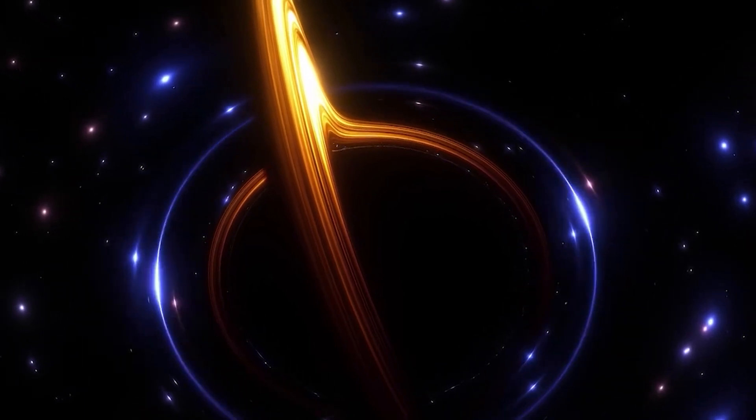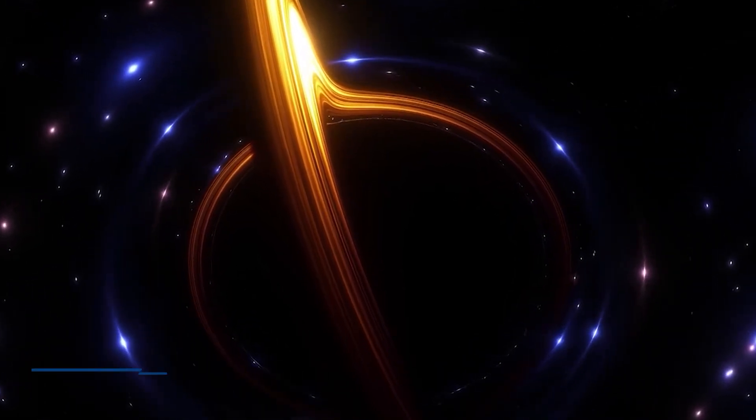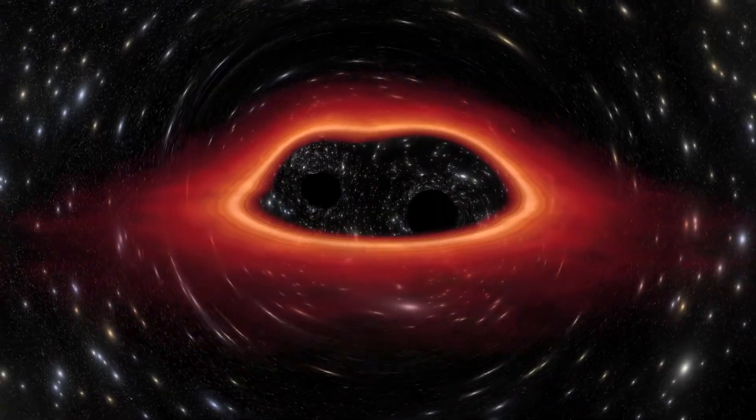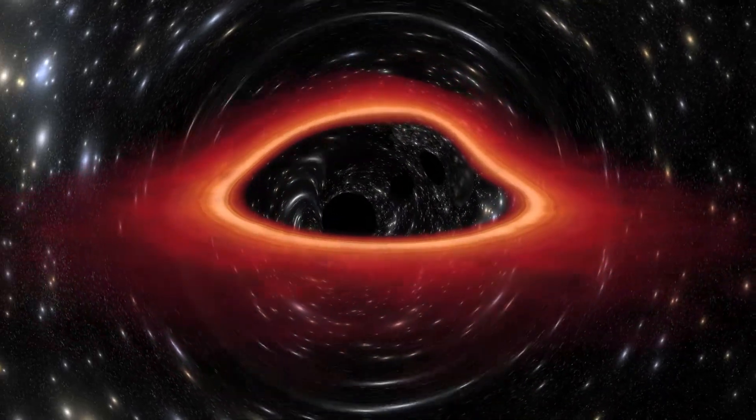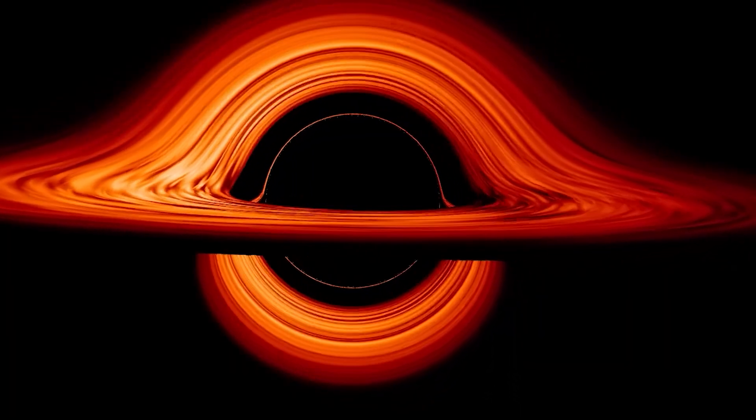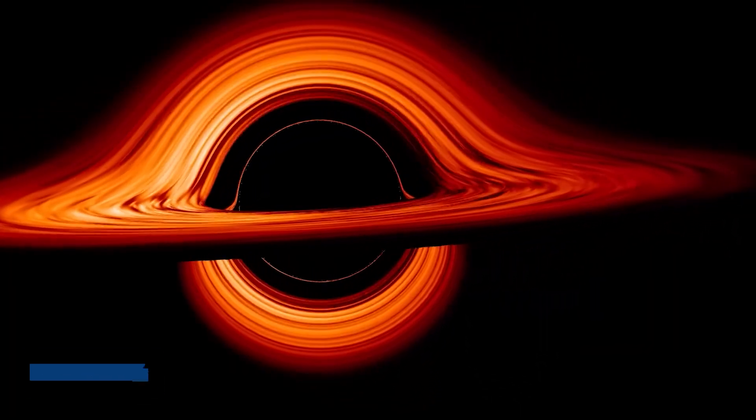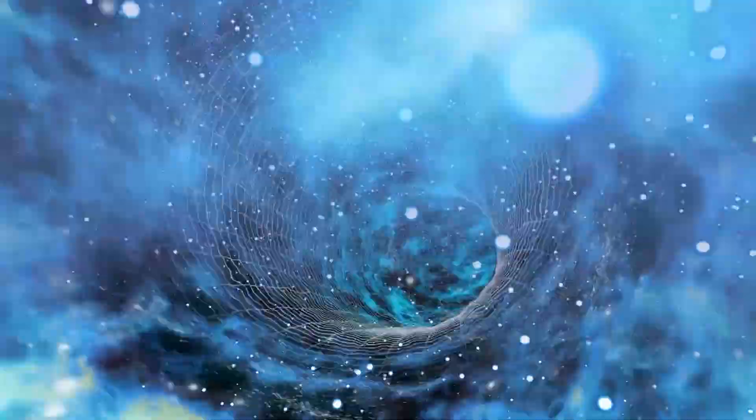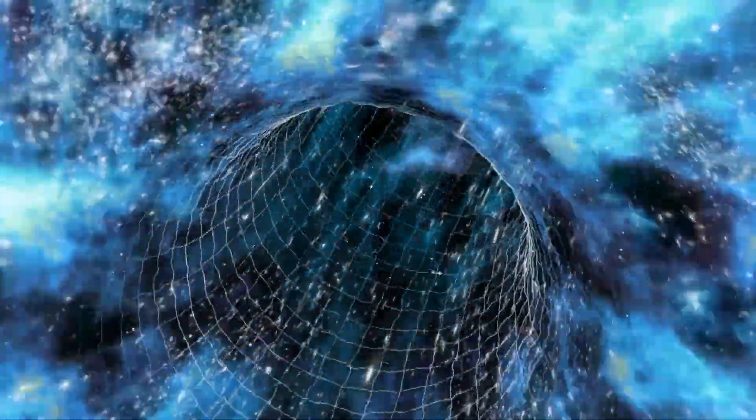We know what happens when something falls across the so-called event horizon. If you cross that region of space then nothing can get out, you'd have to travel faster than light to get out. But we don't know what happens when something goes to the centre of a black hole. It's called a singularity. And the reason we don't know is because our current laws of physics break down in those very extreme conditions.